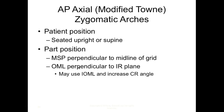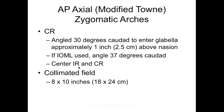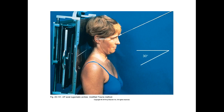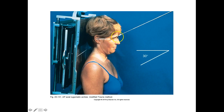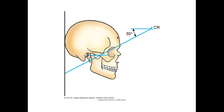For the modified Towns (AP axial of the zygomatic arch), have the patient seated or upright. MSP is perpendicular to the midline of the grid, OML perpendicular to the IR. Angle the CR 30 degrees caudad to the glabella, approximately 1 inch above the nasion. If using the IOML instead of the OML, increase the CR angle to 37 degrees caudad. Center at the glabella, 1 inch above the nasion.